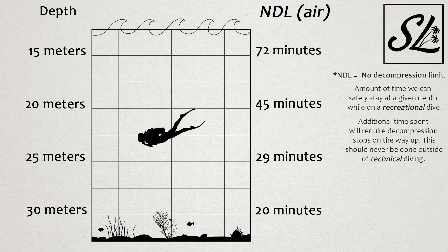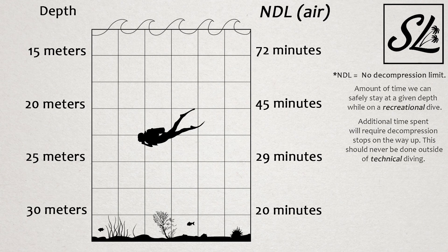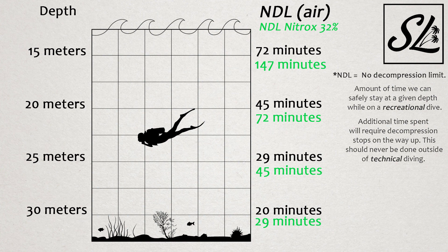You can see our no decompression limits for air on the right side of the graph, coordinating with our depth on the left. Now what nitrox can do is extend these decompression limits, allowing you to stay deeper for a longer period of time without adding any increased risk of decompression illness.